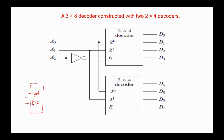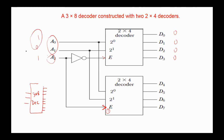Decoders can be constructed using fewer decoders. For example, to construct a 3-to-8 decoder we can use two 2-to-4 decoders: two inputs are applied to each 2-by-4 decoder, and the third input is applied in its normal form to the enable of one decoder and in its complement form to the enable of the second decoder. For example, if the input is 101, D5 is selected.